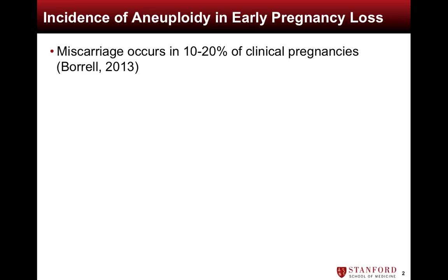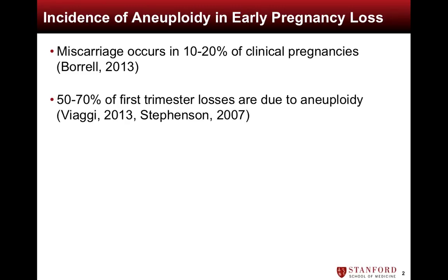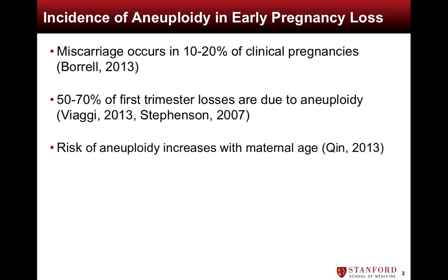Approximately 10-20% of all clinical pregnancies end in miscarriage. Large-scale studies have shown that 50-70% of first trimester losses are due to chromosomal abnormalities. Furthermore, the risk of aneuploidy increases with advancing maternal age and is therefore increasingly relevant in the infertile population.